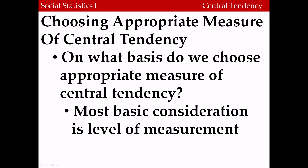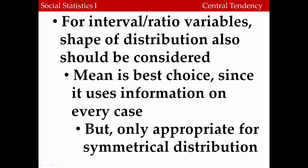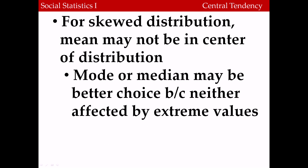How do we choose the appropriate measure of central tendency? We have to take into account two things. The most basic consideration is the level of measurement of the variable. For nominal variables, we only have one choice: the mode. For ordinal variables, we can choose either the mode or the median, depending on whether we want to describe the most commonly occurring case or the case in the middle. For interval ratio variables, we can choose the mean, median, or mode, but the choice depends on the shape of the distribution. If we have a symmetrical distribution, the mean is the best choice since it uses all the values. However, when we have a skewed distribution, the mean is pulled towards the extreme values, so the mode or median is the better choice. The median is probably the best choice because it's always in the middle.